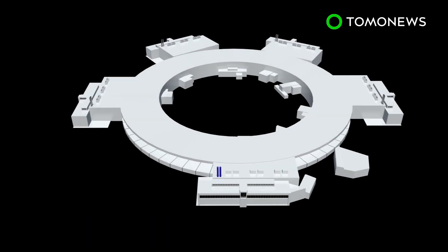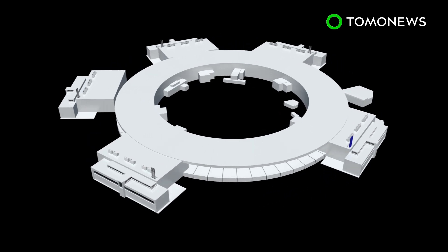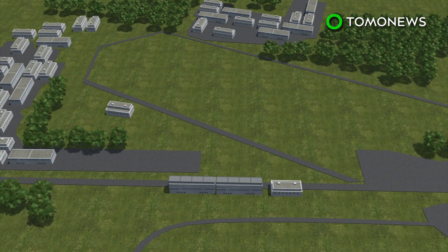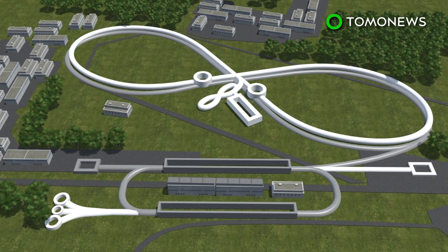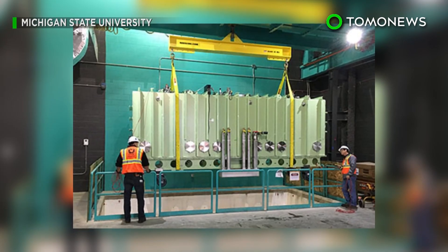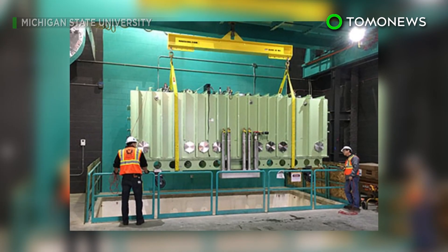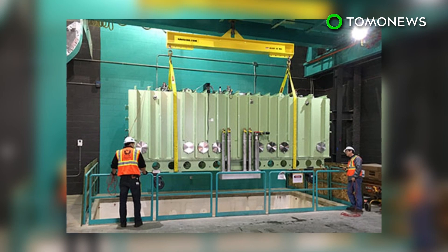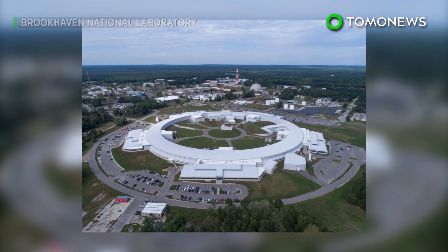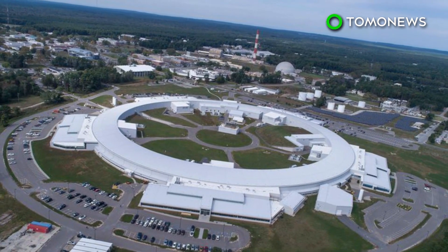Two facilities have submitted proposals to host the EIC. Brookhaven National Laboratory has a proton accelerator but no electron ring, while Jefferson Lab has the electron accelerator but will need a proton ring. The Department of Energy is currently building a $730 million facility for rare isotope beams and may not be able to fund the proposed collider until after 2020. So for now, the two labs are collaborating on R&D.